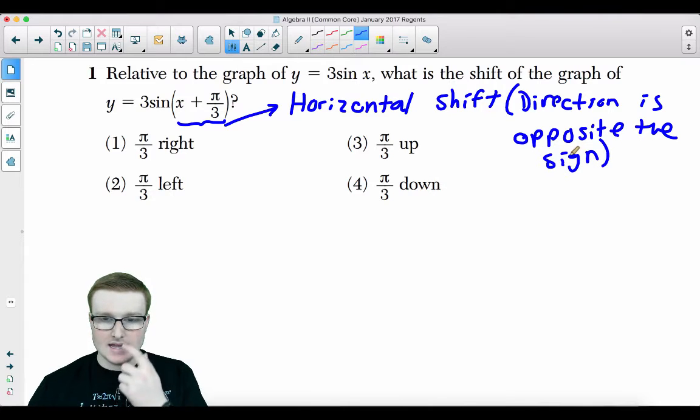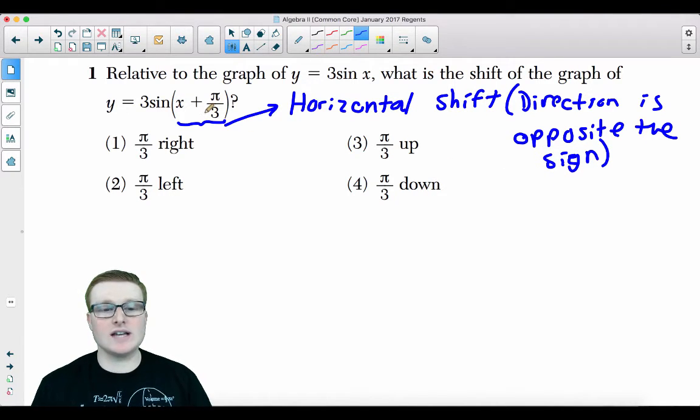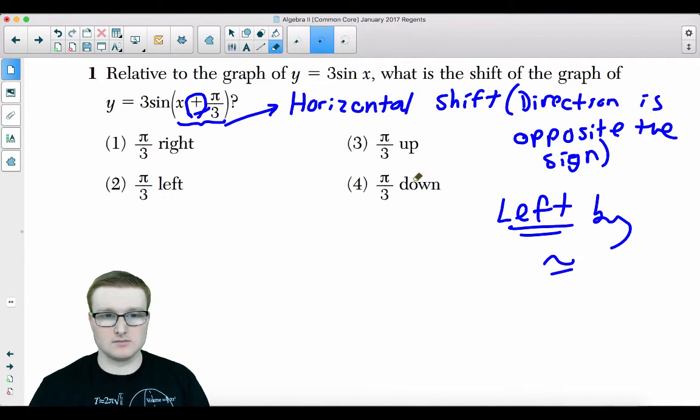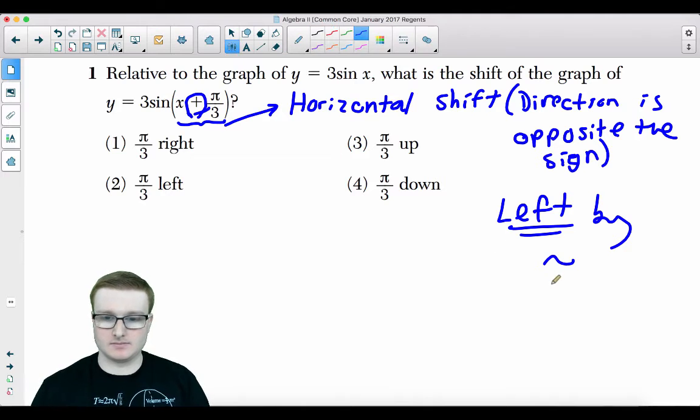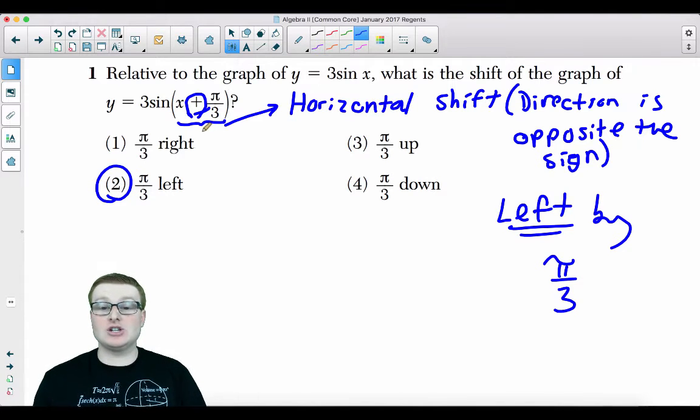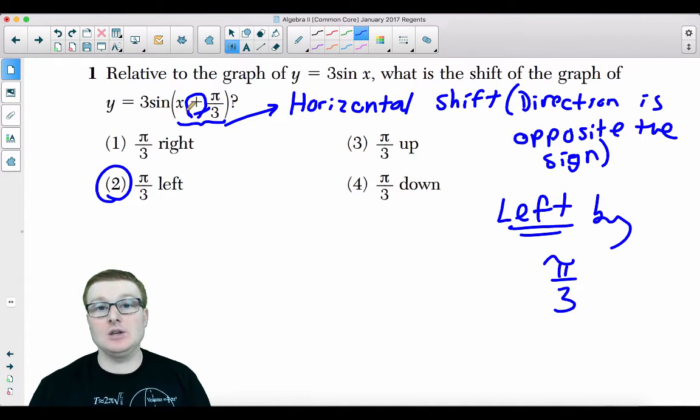So in this case, since it is a horizontal shift and it's saying add plus pi over 3 units, we know for sure that if it's positive, you're actually moving to the left by pi over 3 units. So your answer for this one is going to be choice 2. It is the opposite sign or the direction is opposite the sign of what's given.